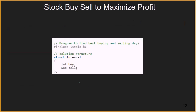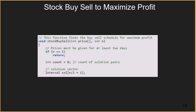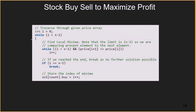Now let's look at the implementation of the algorithm. We have defined a structure called interval which contains two integer members: buy and sell. These store the respective days at which one should buy and sell the stock to maximize profit. The function stock_buy_sell takes the price array and integer n as arguments, where n is the size of the price array. We first check that prices are given for at least two days, otherwise we return. Then we create an array of type structure interval, with size n/2 + 1, which is the maximum size required in the worst case. We declare a variable i and initialize it to 0.